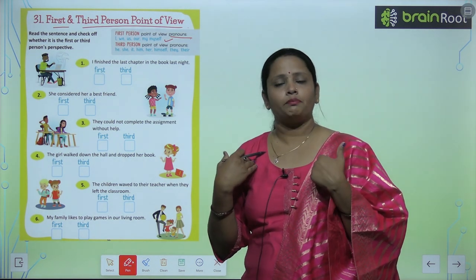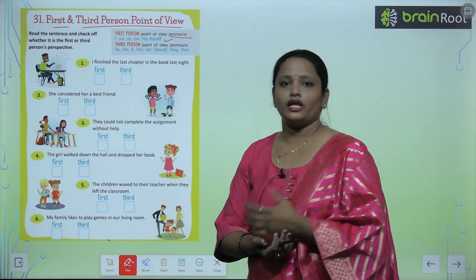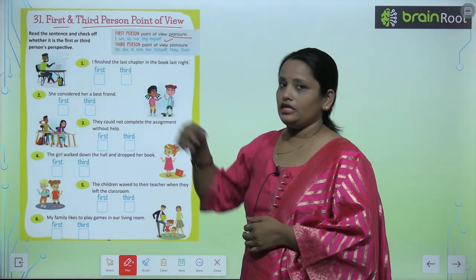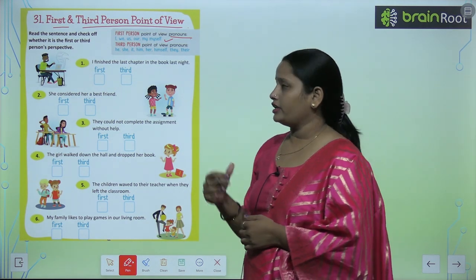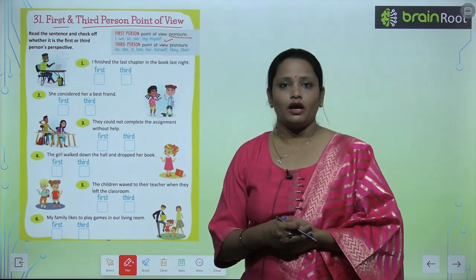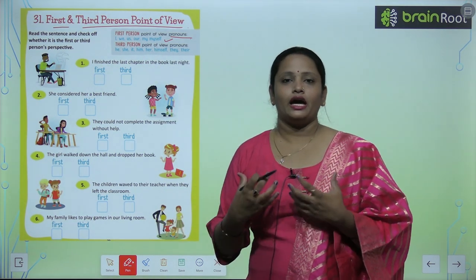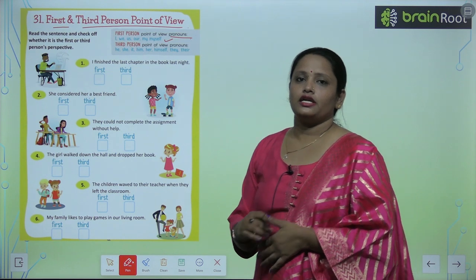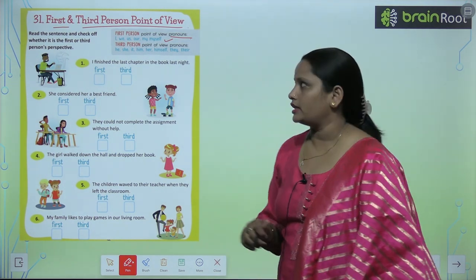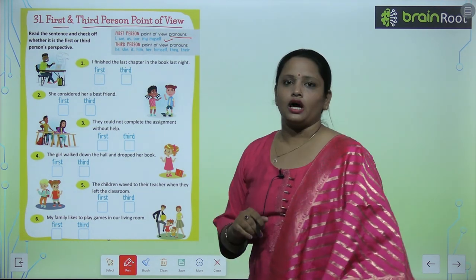First person कौन होता है? मैं — अपने लिए। हम खुद के लिए 'I' यूस करते हैं। 'We' — मैं और अपने friends के लिए, जिसमें मैं आ रही हूँ। 'Our', 'my', और 'myself' में भी मैं include रहूँ। ये सारे words जो हम first person के लिए यूस करते हैं।